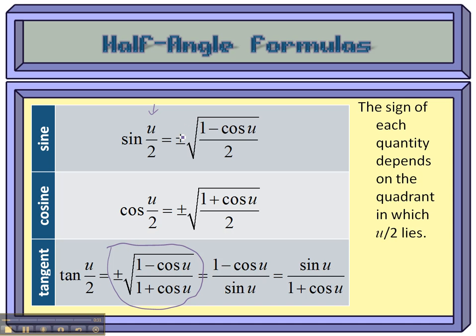Notice that we've got plus or minus on these square roots. Plus or minus means that you're going to choose either the plus or the minus, depending on where this angle, u over 2, is.